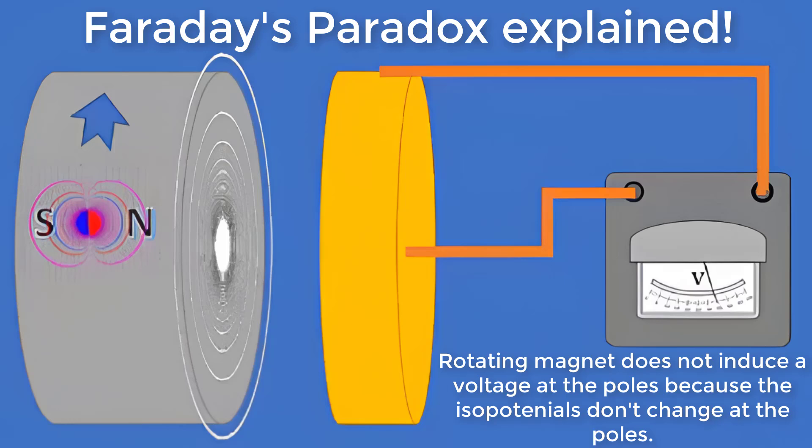Faraday's paradox explained. Rotating magnet does not induce a voltage at the poles because the isopotentials don't change at the poles.